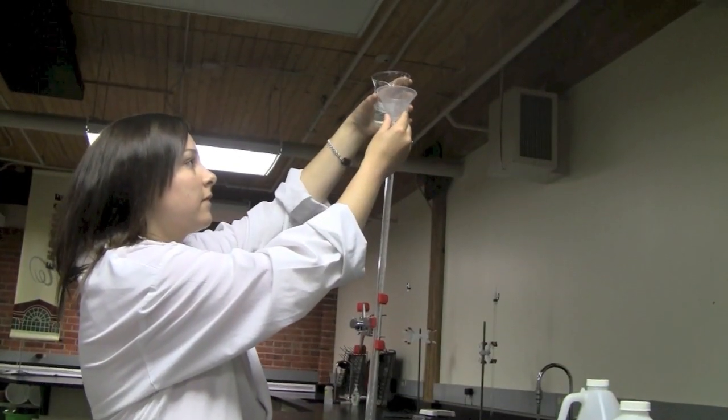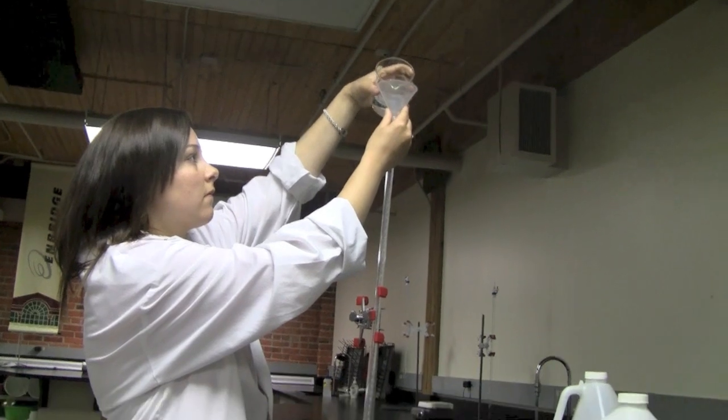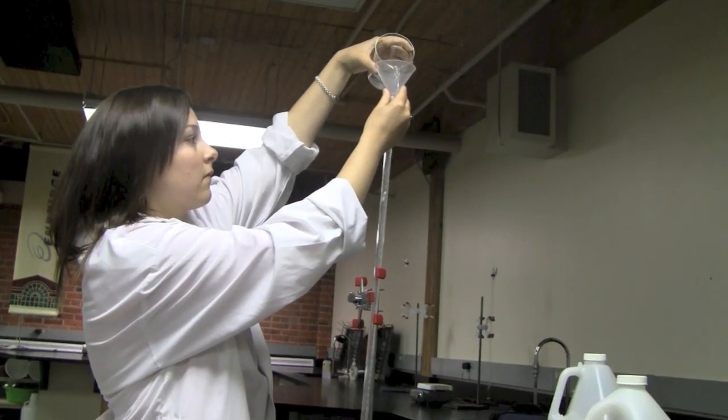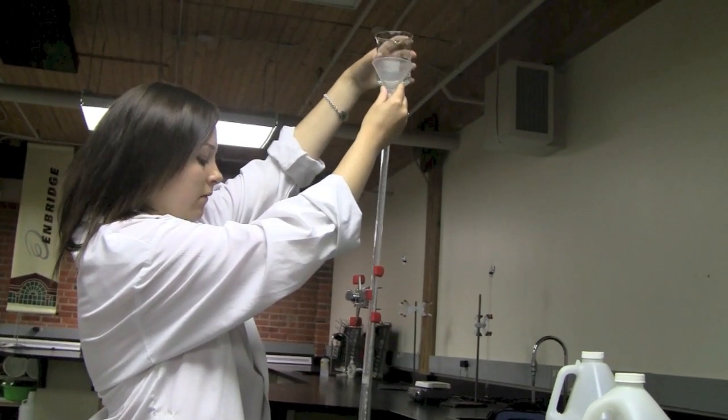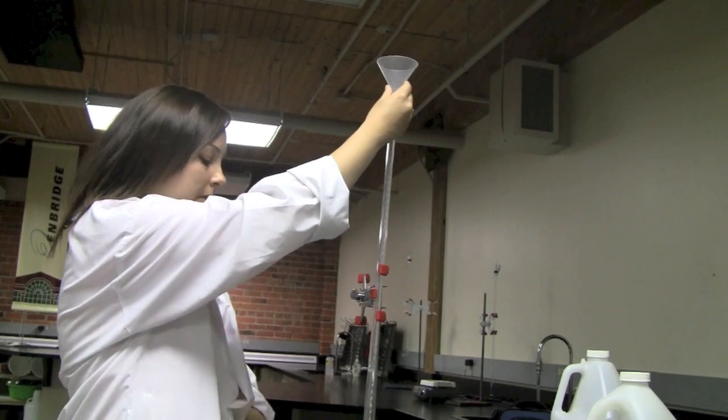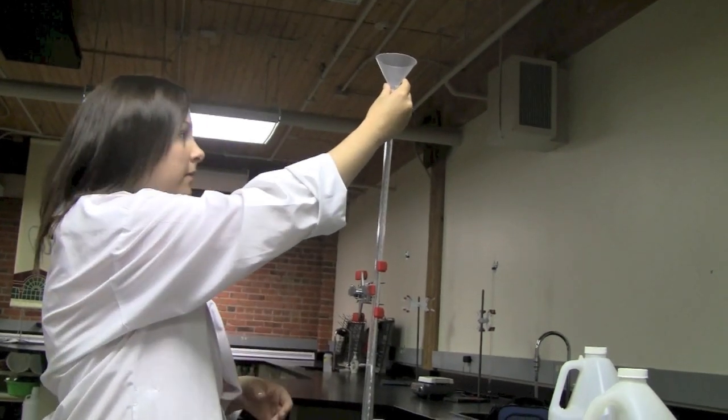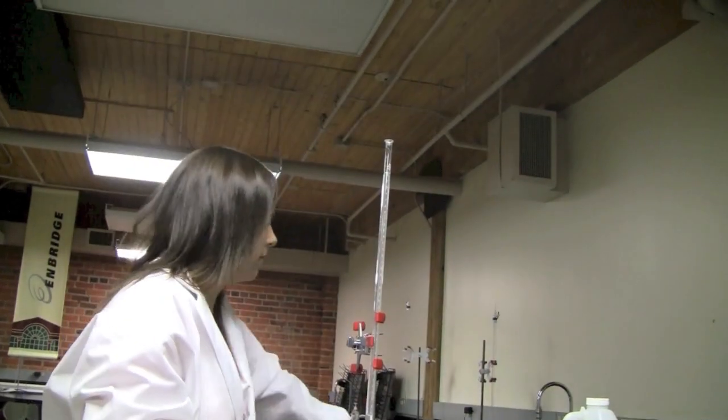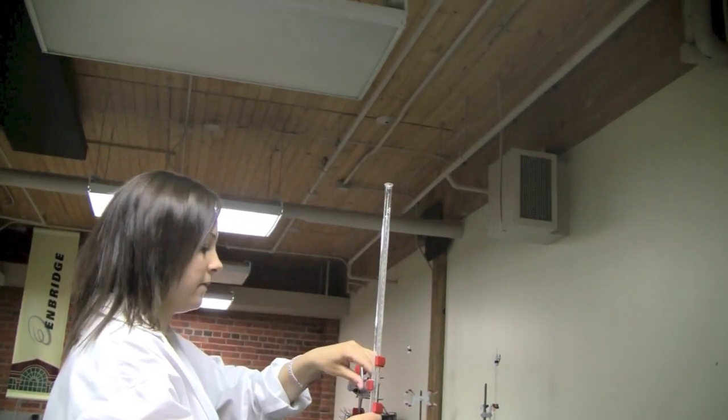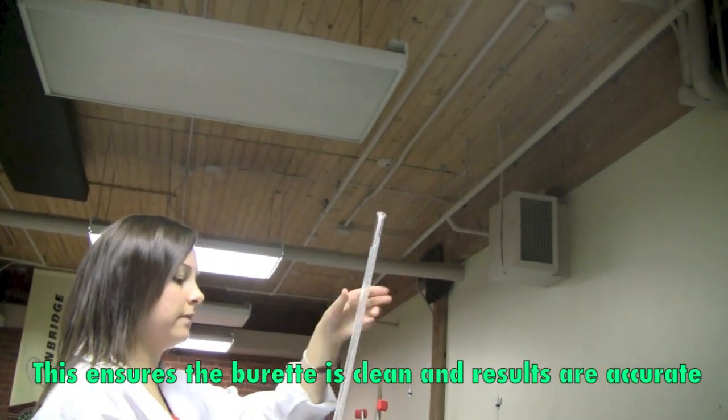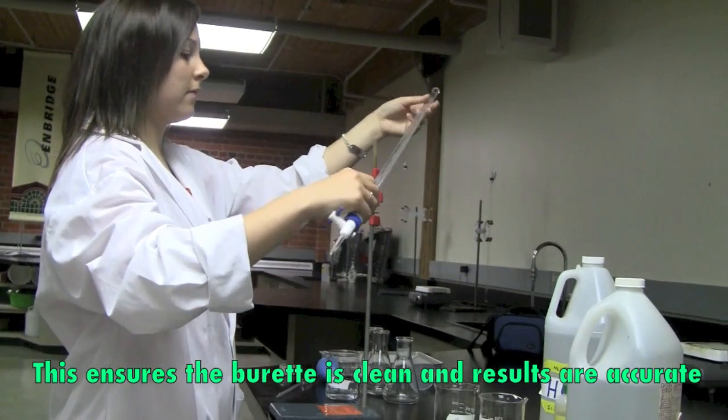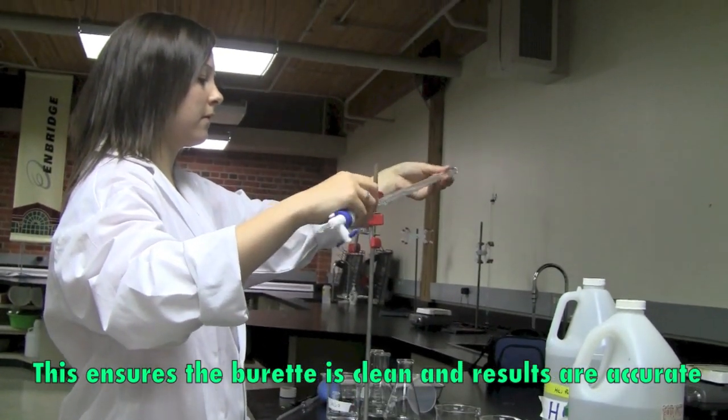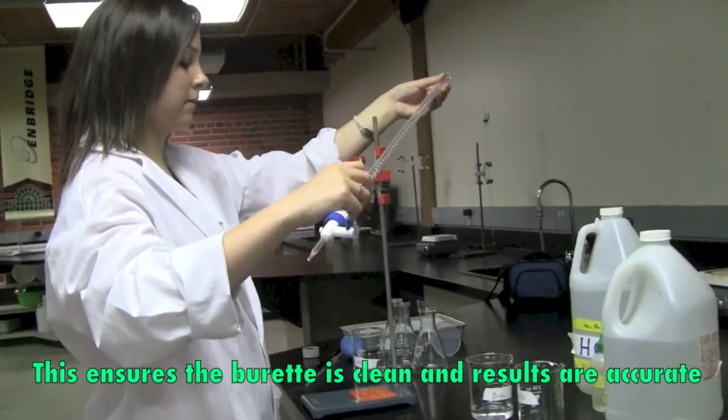Pour in just a very little amount, again, make sure your burette is closed. Take the funnel out and you're going to swirl the burette for a little bit, kind of rinsing it here and there. And you can actually just dump it down and drain it into the sink.